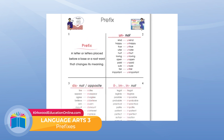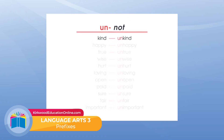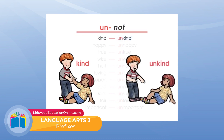Look at square number two. The prefix U-N, 'un,' changes the root or base word to almost its opposite. It means 'not.' Like 'kind' — kind means to be loving, to be kind, to show concern for someone else. 'Unkind' means the opposite, not to be kind.